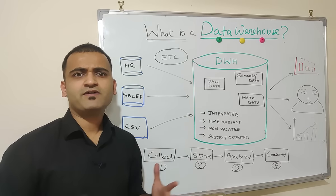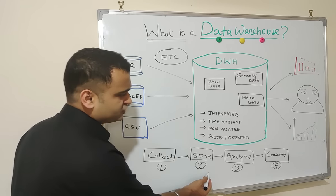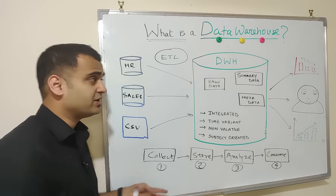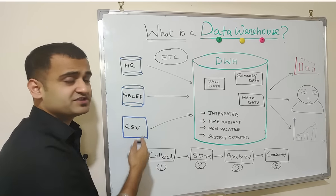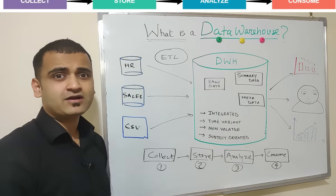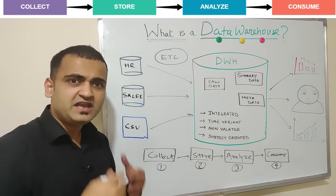The whole data warehouse can be divided into four different stages. The first is collect, then store, then analyze, and finally consume. At collect stage, you fetch the data from your source systems in its raw form and store it in a layer called a staging layer. And this process is done by the ETL process.